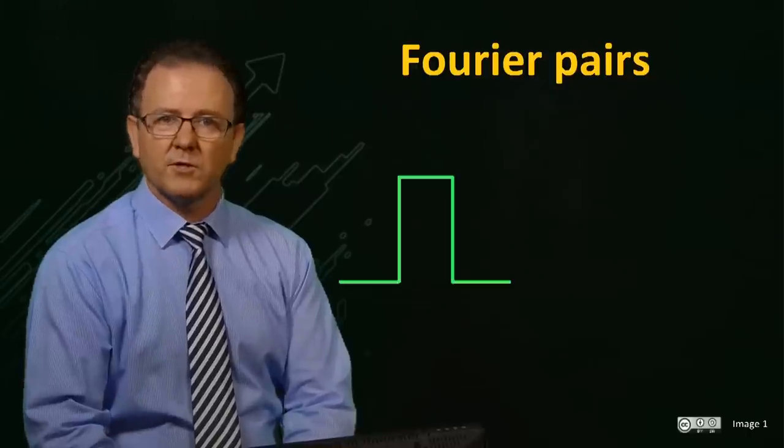Waveforms that are related by the Fourier transform are known as Fourier pairs, since the Fourier transform is reversible. So here we have a rectangular waveform which defines the shape of an RF envelope. The Fourier transform of a rectangular waveform is this waveform, which is called a sinc function, and has the form sin x over x. This is the shape of the frequency excitation profile of a rectangular RF pulse.